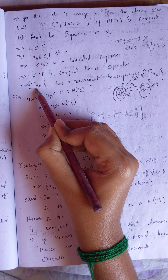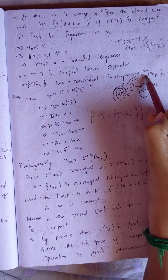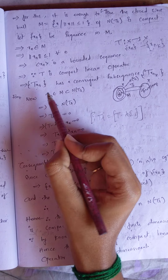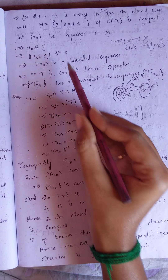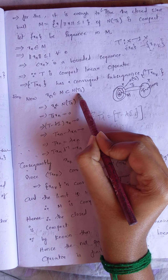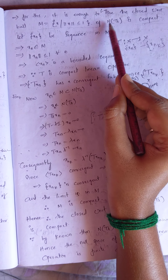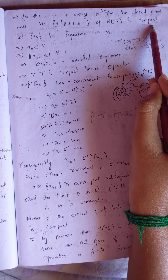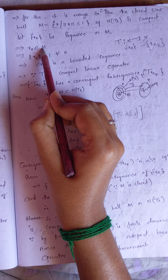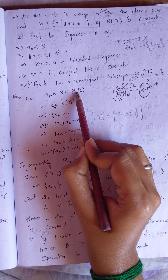Since T is compact and x_n is bounded, T(x_n) has a convergent subsequence, let it be T(x_nk). Now, x_n belongs to M and M is a subset of N(T_lambda), so M is the closed unit ball of the null space. Since x_n belongs to M and M is a subset of N(T_lambda), x_n belongs to N(T_lambda).